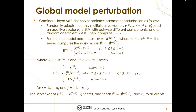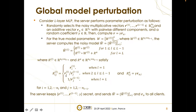In the global model perturbation phase, the server randomly selects L-1 noise multiplicative vectors R1 to R(L-1), belonging to the positive real number field, and an additive vector R_A with pairwise different components and a random coefficient gamma, then computes R equals gamma multiplied by R_A. For the two model parameters W, the server computes the noise model W-hat as follows, where the circle symbol represents the Hadamard product. The big R and big R_A satisfy the following equations. Finally, the server keeps R1 to R(L-1) and gamma secret, and sends W-hat and R_A to all clients.